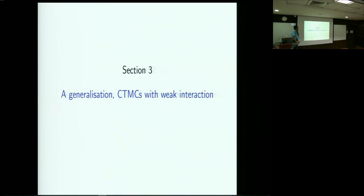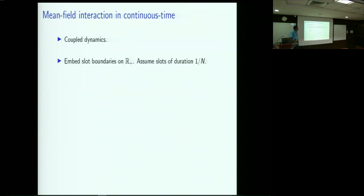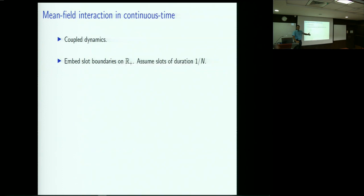Before going to level two, I want to generalize this beyond the wireless LAN example. There is coupled dynamics here because your movement or evolution depends on whether somebody else is transmitting. I want to turn this discrete-time slot-by-slot dynamics into a sort of continuous-time dynamics. I will do an embedding of the slot boundaries on the real line zero to infinity, assuming that the slot durations are of size 1/n — it's an evenly spaced grid of time points.